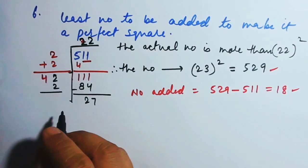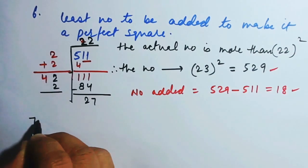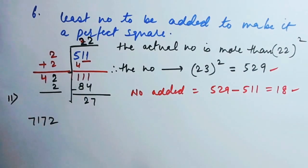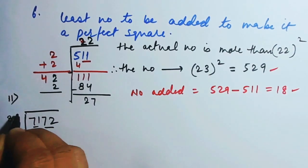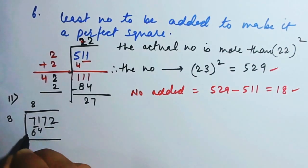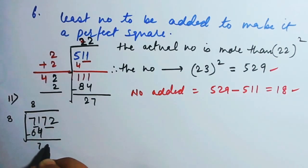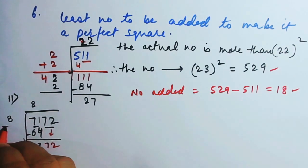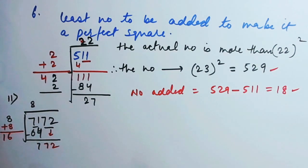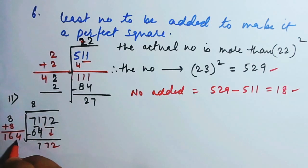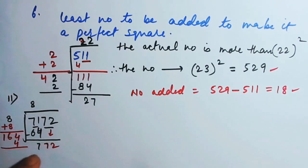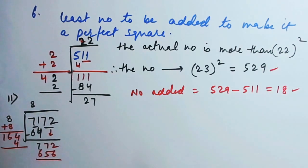Similarly, when you get a number like 7172 and are asked the same thing, you quickly work on its square root. Eight times eight is 64; subtract to get 7. Bring down 72 — so 772 comes down. Add 8 over here: eight plus eight is 16. Put a number beside 16 such that you get a number very close to 772. I find that 164 times four gives 656. So 656, and the remainder is 116.